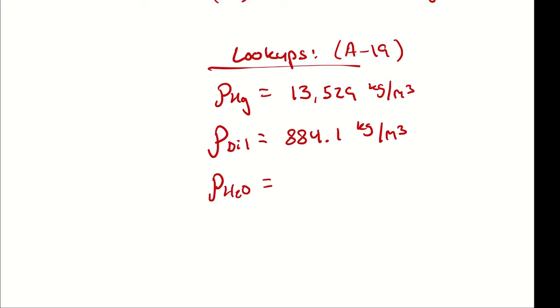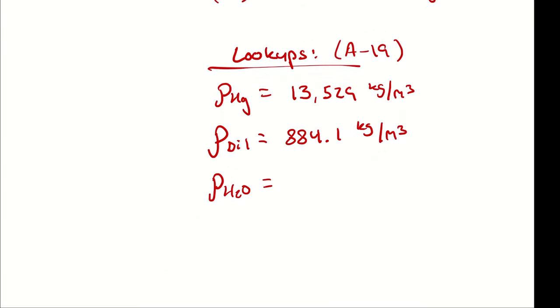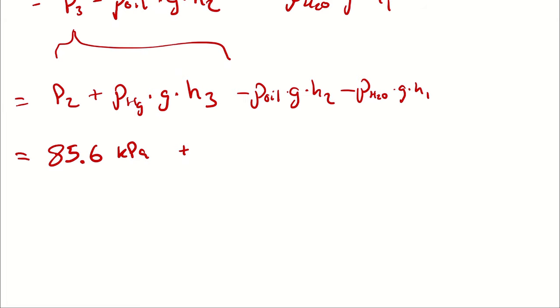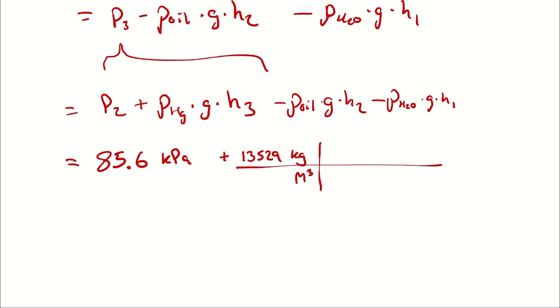But a density for that oil at 300 Kelvin is 884.1. Then water, because we're grabbing 300 Kelvin, we're going to use 996.5. And with those three densities, we can continue our math. So I will say 13,529 kilograms per cubic meter. And we're multiplying by gravity. Note that you could factor out gravity if you wanted to. I want to leave it in because I want to calculate these quantities separately for reasons.